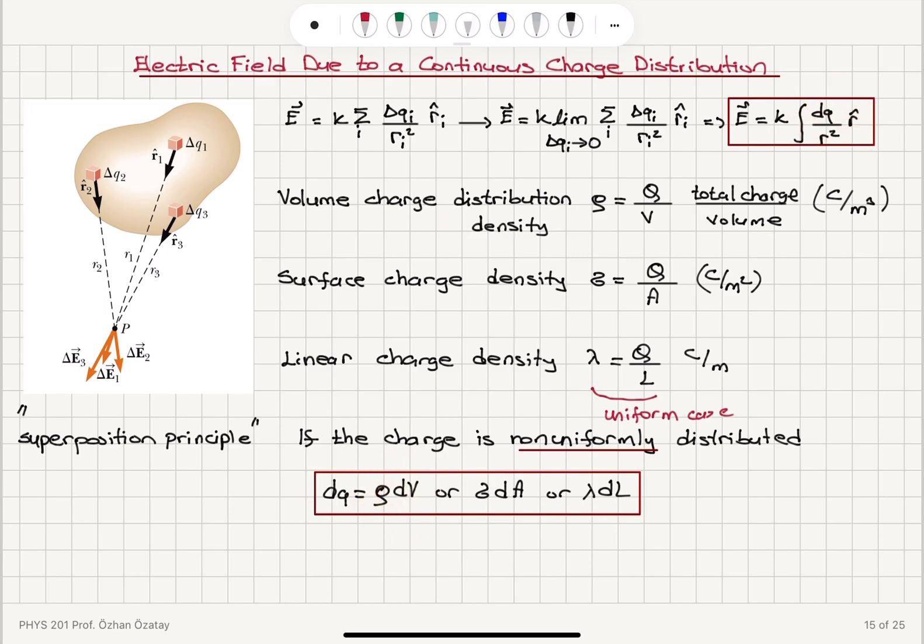And now we address the issue of how we calculate this DQ. For a volume distribution, it's rho DV. For an aerial distribution, it's sigma DA. For a linear distribution, it's lambda DL. Lambda is linear charge density, sigma is surface charge density, and rho is volume charge density.